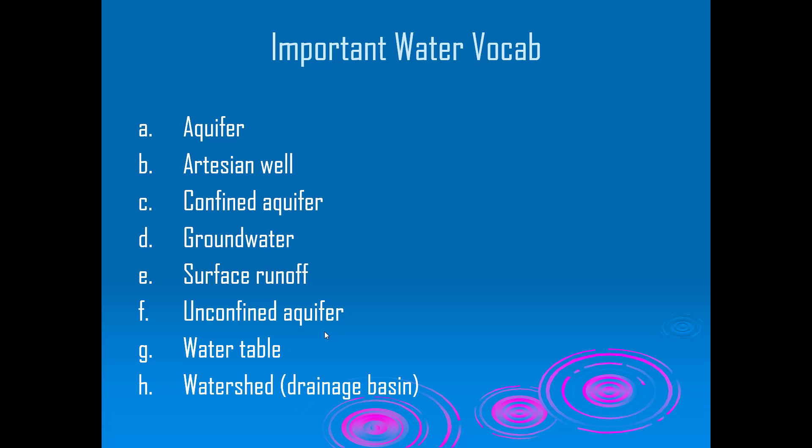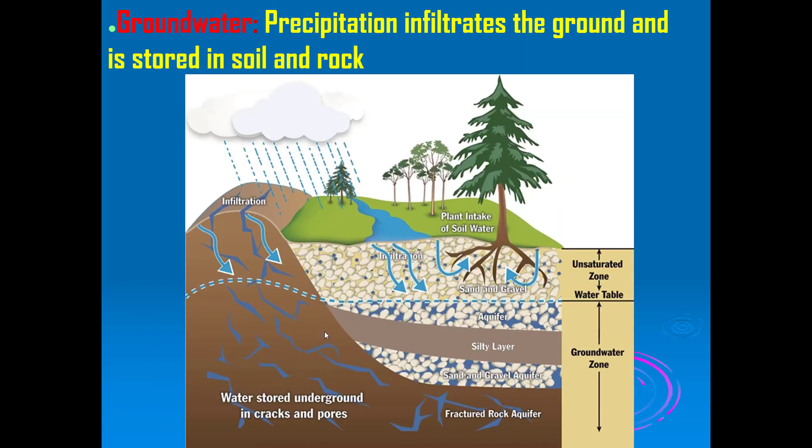On page 23, important water terms. The alignment got messed up — the section on how climate change affects the water cycle is supposed to come before the important water terms, so draw yourself an arrow, as the rest of the terms continue on page 24. Take a second with a pencil and attempt to fill these in, then let's go over the answers. Groundwater is precipitation that infiltrates the ground and is stored in soil and rock.